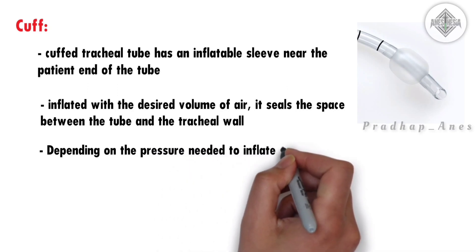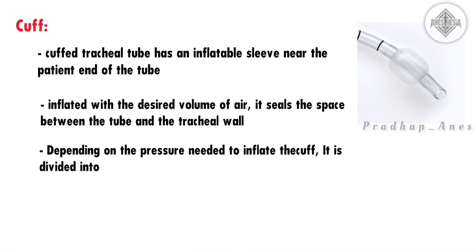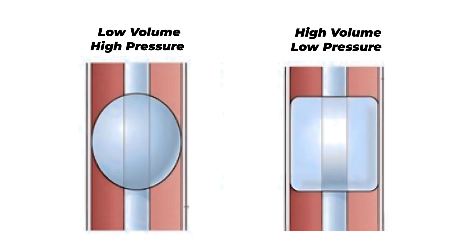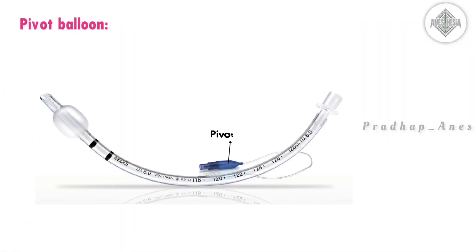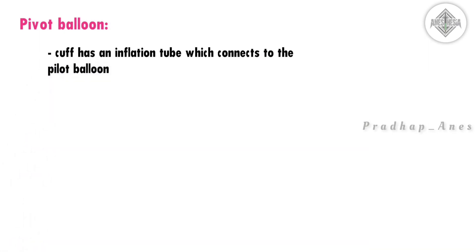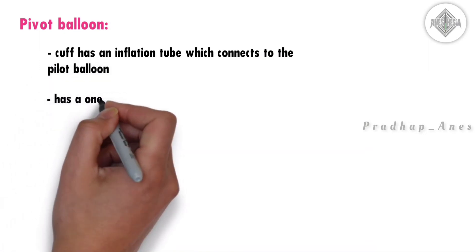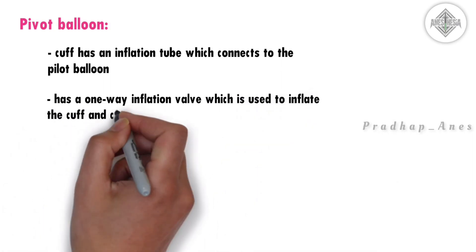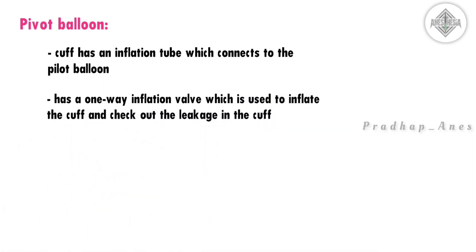Cuff types. Depending on the pressure needed to inflate the cuff, it is divided into low volume high pressure cuffs, and high volume low pressure cuffs. The cuff has an inflation tube which connects to the pilot balloon. This pilot balloon has a one-way inflation valve which is used to inflate the cuff and check for leakage in the cuff.